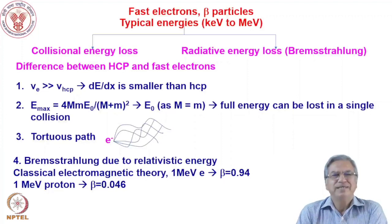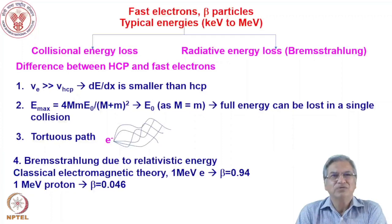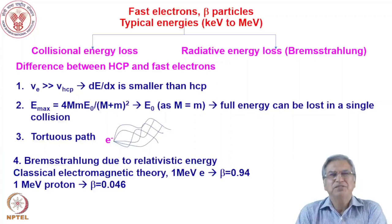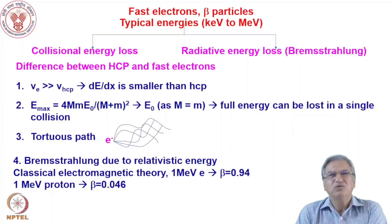The second important point is the energy transferred by an electron to an electron in the medium in one collision. For heavy charged particles, the maximum energy an electron can gain is given by 4mM·E₀/(m+M)², with cos θ = 0 for maximum transfer. If we substitute capital M as the mass of the electron — so both M and m are equal — this becomes E_max = 4m²E₀/(2m)² = E₀. That means the electron can lose all its energy in a single collision.